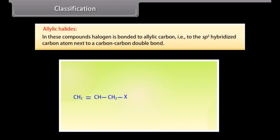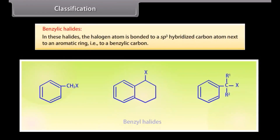Allylic halides: In these compounds, halogen is bonded to an sp3 hybridized carbon atom next to a carbon-carbon double bond. Benzylic halides: In these halides, the halogen atom is bonded to an sp3 hybridized carbon atom next to an aromatic ring, that is, to a benzylic carbon.